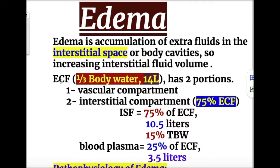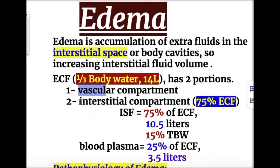The extracellular fluid has two portions: the vascular compartment and the interstitial compartment, in which extra fluid accumulation can occur.